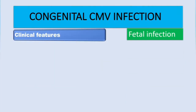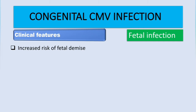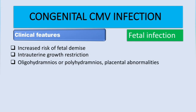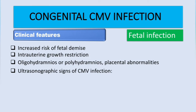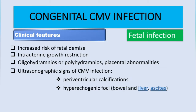If there is a fetal infection, firstly there is an increased risk of fetal demise, intrauterine growth restriction, oligohydramnios — where there is reduced amniotic fluid — or polyhydramnios, where there is too much amniotic fluid. There may also be placental abnormalities. Ultrasonographic signs of CMV infection include periventricular calcifications, hyperechoic foci in the bowel and liver, and ascites.